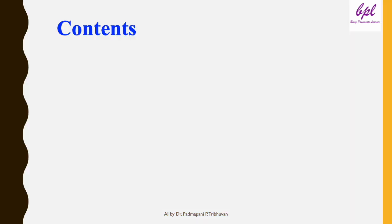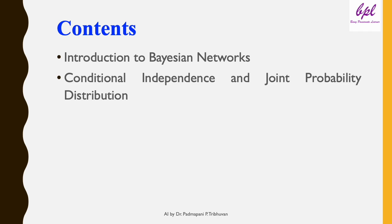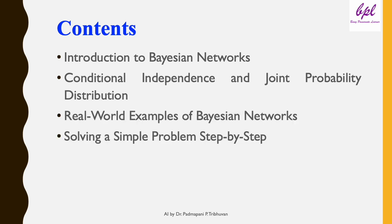Here is what we are going to discuss in this video. We will start with an introduction to Bayesian networks, understanding their components like nodes, edges, and probabilities. Then we will discuss conditional independence and joint probability distribution, which forms the backbone of Bayesian networks. We will also explore some real-world examples before solving a problem step by step. By the end, you will have a solid foundation for mastering Bayesian networks.